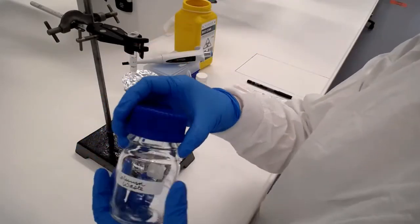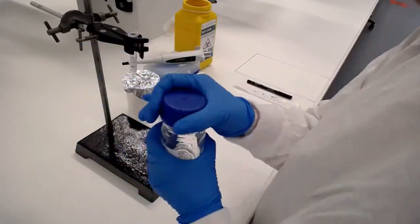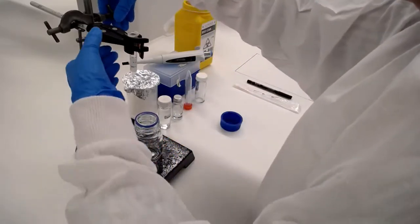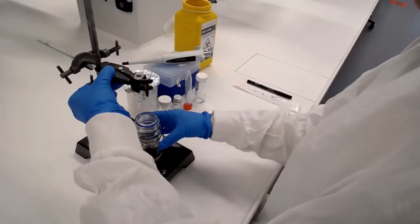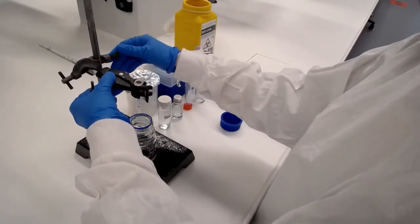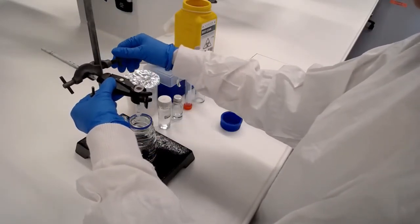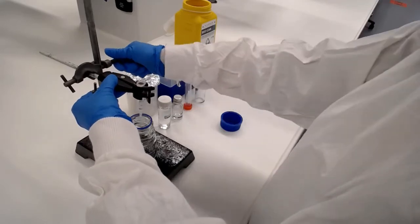We've attached it to the little clamp on the retort stand and we're just going to lower this so that it's just above our column waste bottle. Very important to put that column waste there or else we're going to make a big mess. Make sure that waste bottle is centered under the column.